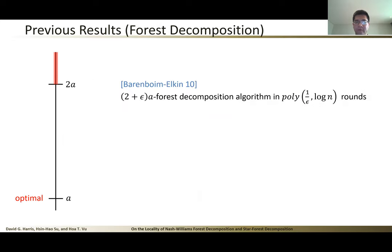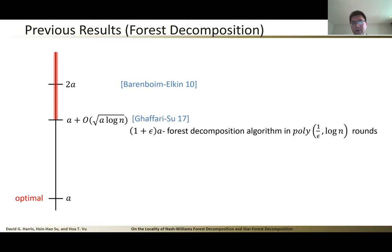These are the results for forest decomposition. Barenboim and Elkin have this well-known edge partition algorithm for forest decomposition, which can get the number of forests or colors to a. Ghaffari soon pushed this below 2a by giving the algorithm that can achieve a + 2√a log n colors. This is the current status of the problem.